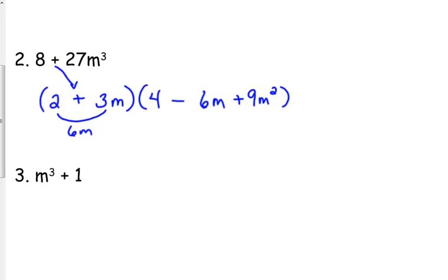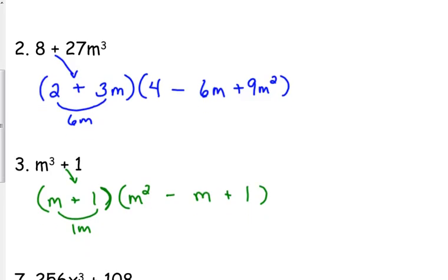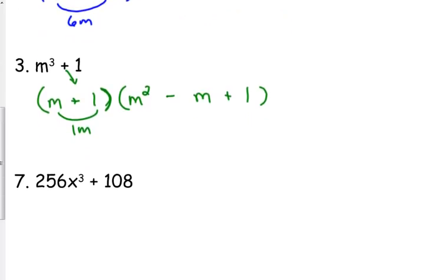Now, one like number 3, I tend to throw people for a loop just because it's like, well, what am I taking the cube root of? It really is very simplistic, but it does tend to trip people up. The cube root of m cubed is just m. The cube root of 1 is 1. Square the m, m squared. Square the 1, you get 1. Multiply them together, you get 1m. We don't really write a coefficient of 1, so I'm just going to put an m. Again, it was positive, so positive, negative, positive.